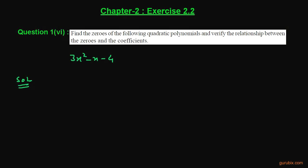Welcome friends. Here is the sixth part of question number one of exercise 2.2 of chapter 2. The question says: find the zeros of the following polynomial, where the polynomial is 3x squared minus x minus 4, and verify the relationship between the zeros and the coefficients. Let us see how to solve this question.